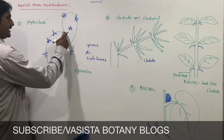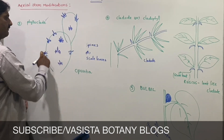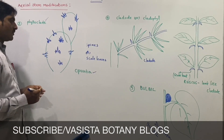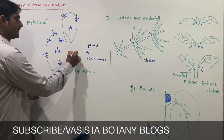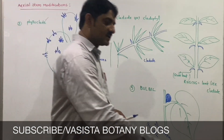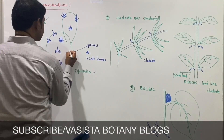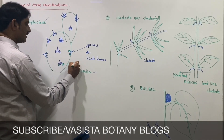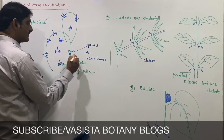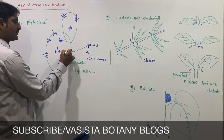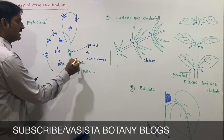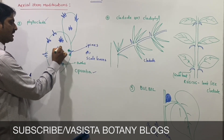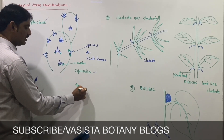In Opuntia, the stem modifies into a flattened phylloclade. Some leaves change into spines and some into small spinous leaves. These small spinous structures are known as glochids, and they are together called areoles.